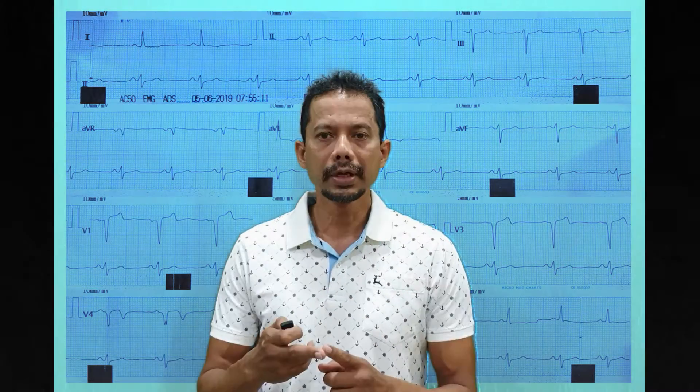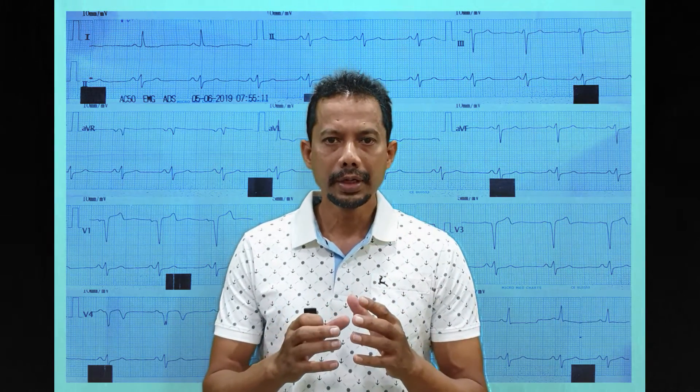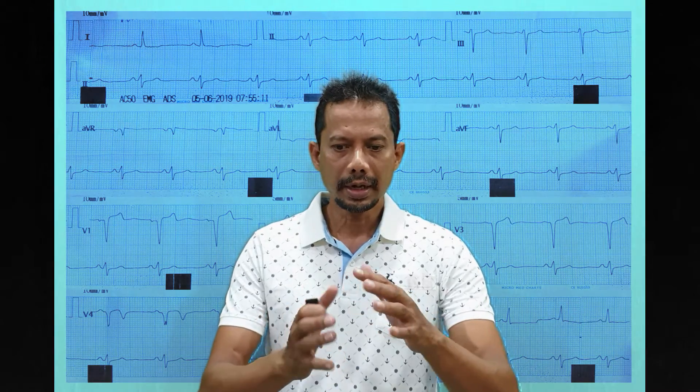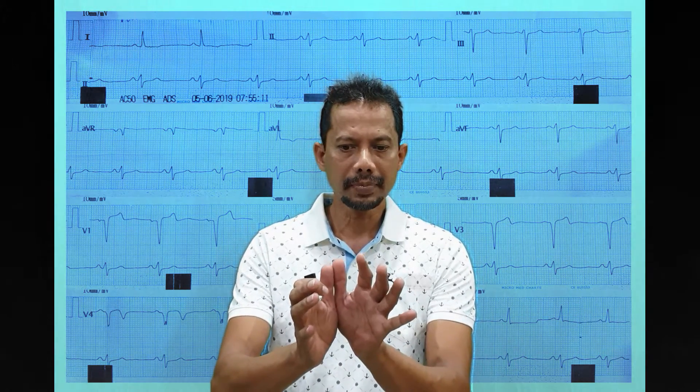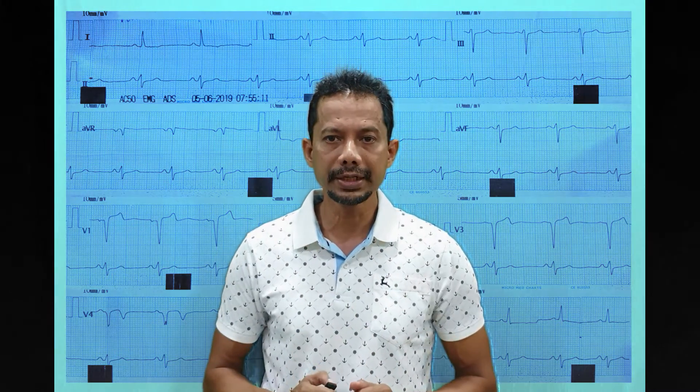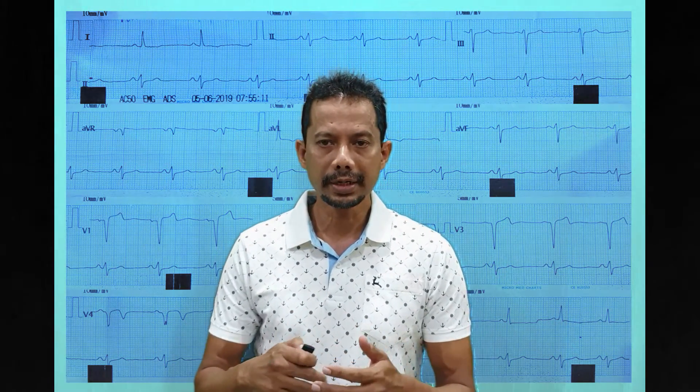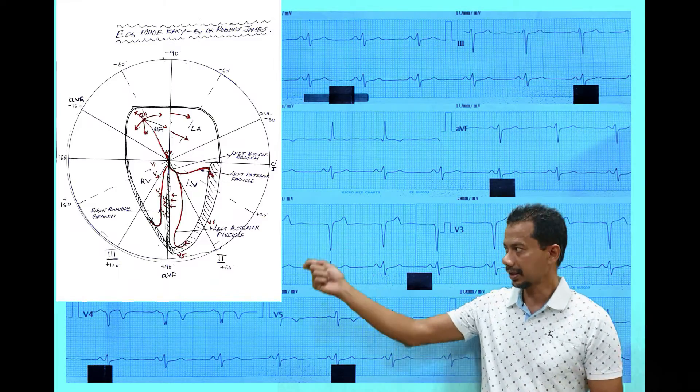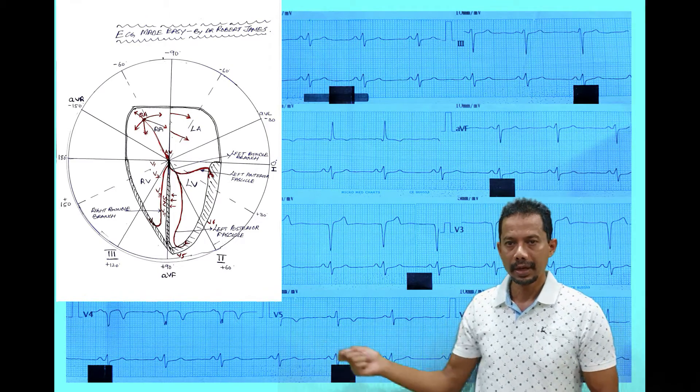Lead V1 and V2 are looking at the right atrium and the interventricular septum. You have to use your imagination to understand what I am saying. In this circle we discussed V1 and V2.